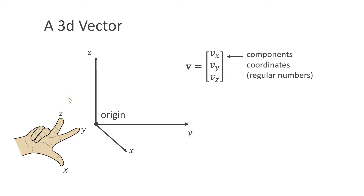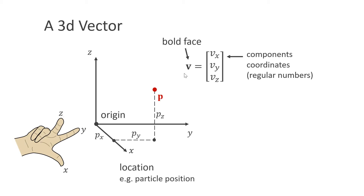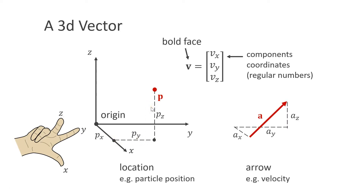A vector is just a combination of three components or coordinates. We can write them in column form surrounded by square brackets or as a single symbol, but then we use boldface. We can use vectors for two different things: first, to describe a position in 3D space like a particle position using x, y, and z; and also to describe an arrow like the velocity of a particle.